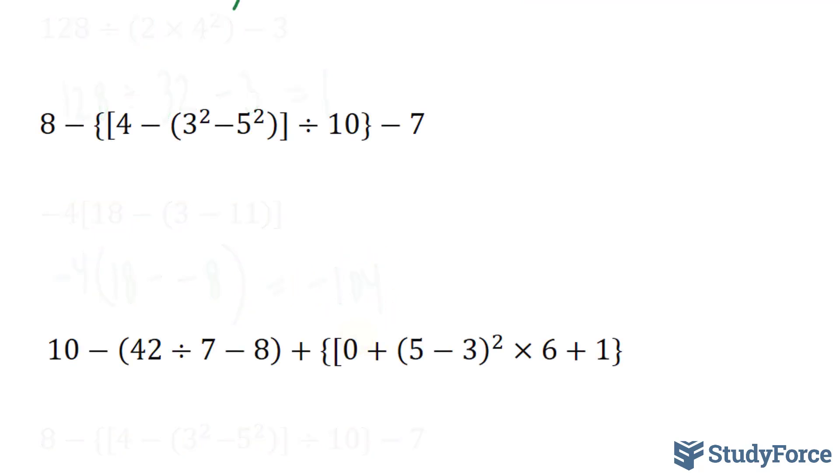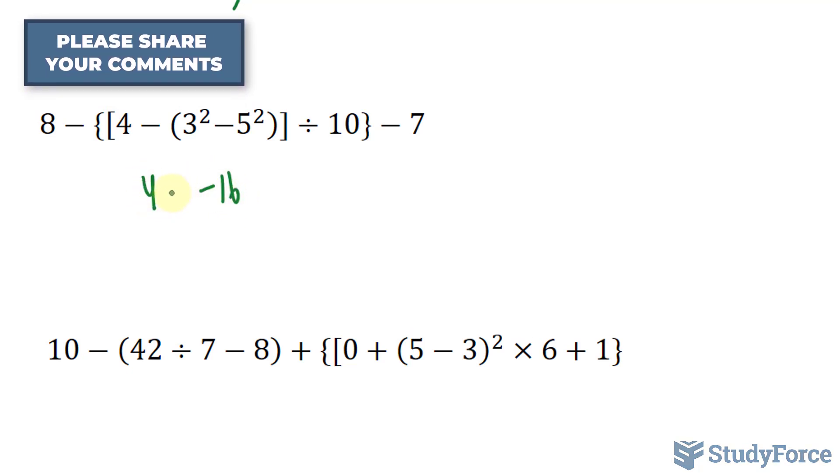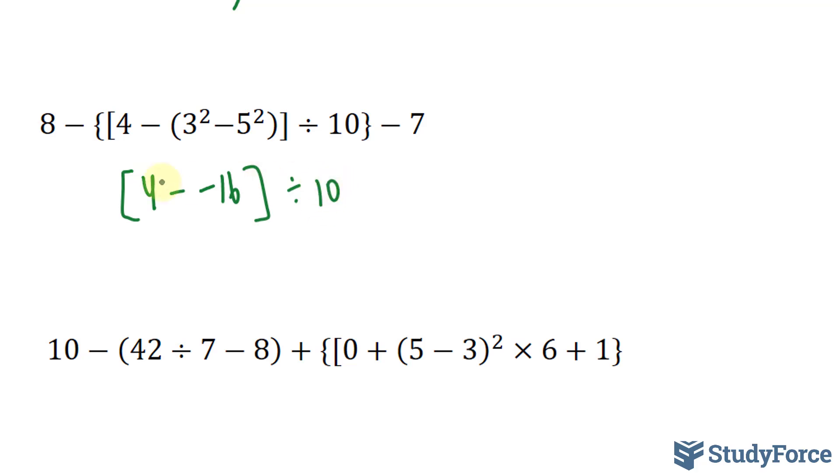Now, only a few examples left. This time we have these curly brackets, those are called braces. We change the style when we have brackets within brackets. We have to focus on what's within the parentheses. 3 to the power of 2 is 9 minus 25. 9 minus 25 is -16. So 4 minus -16 divided by 10, we have these braces, minus 7, 8 minus everything. 4 minus -16 is 20. 20 divided by 10 is 2, so 8 minus 2 minus 7. 8 minus 2 is 6, minus 7 is -1.